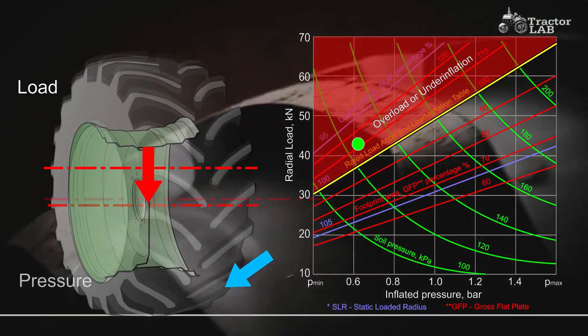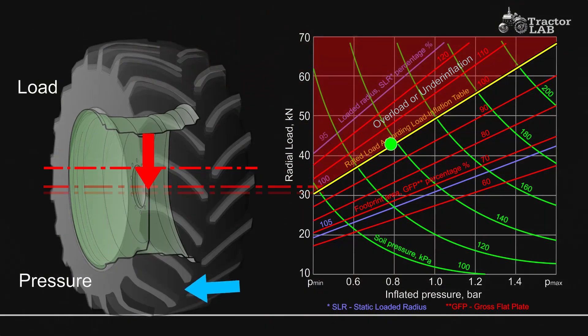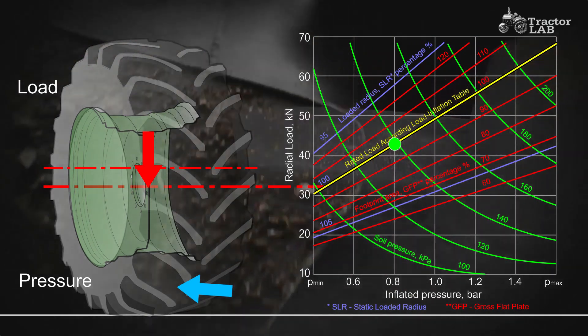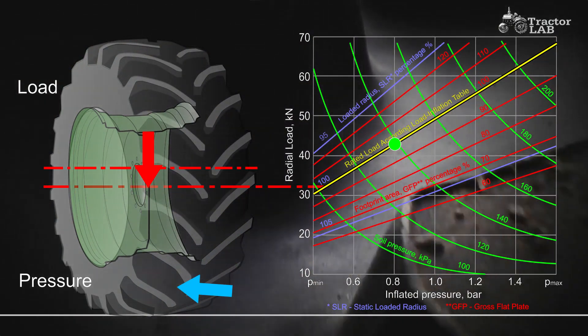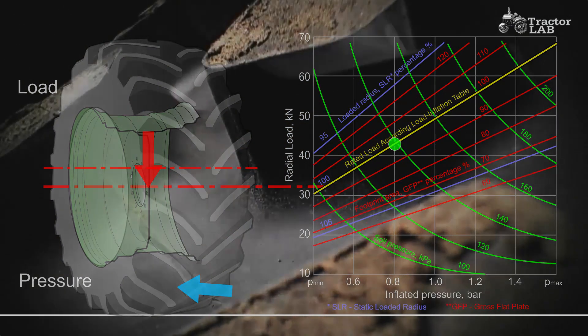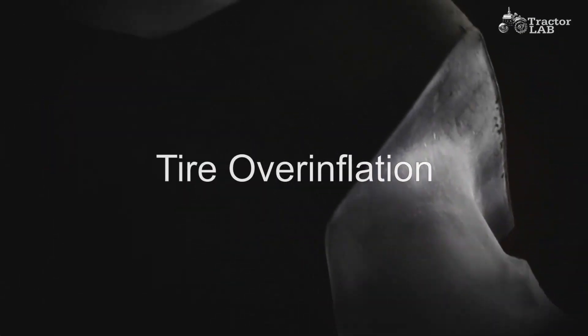Sidewall buckles will develop, leading to carcass breaks in the sidewall. While an underinflated drive tire may pull better in some soil conditions, this is not generally true and not worth the high risk of tire damage incurred.